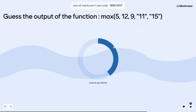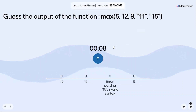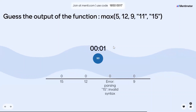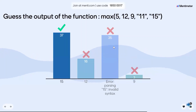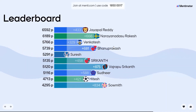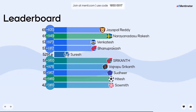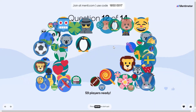Guess the output of the function. Terraform automatically considers type conversion — a string is automatically converted to an integer. Integer converges. Okay, Jaypal, Rakesh, and Venkatesh.